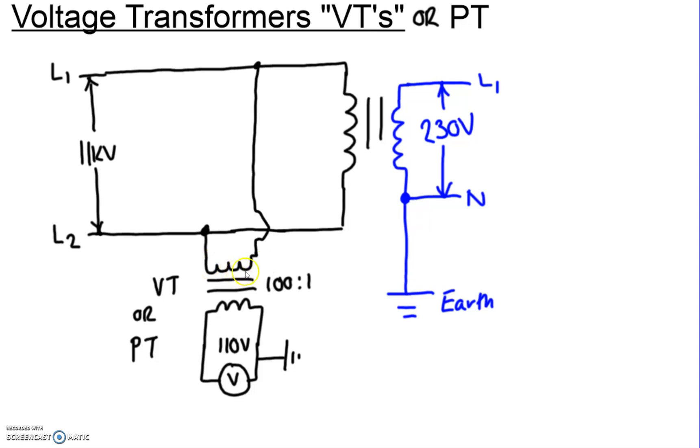So this is our primary feed. And then we have a voltmeter, 110 volt voltmeter. This could be a digital multimeter plugged into the transformer, or it could be just a moving coil meter, panel meter. The ratio is 100 to 1. So effectively on full load, 11 kilovolt, we will be displaying 110 volts.